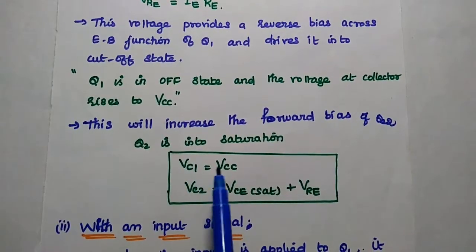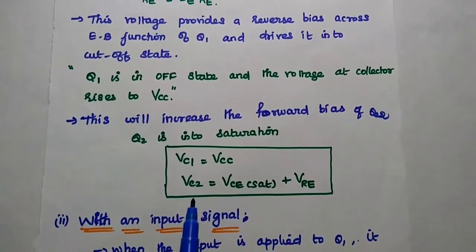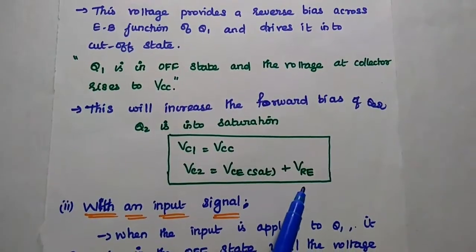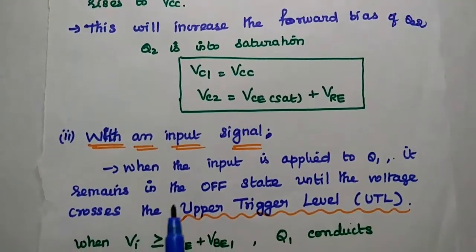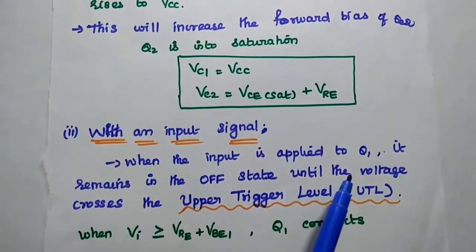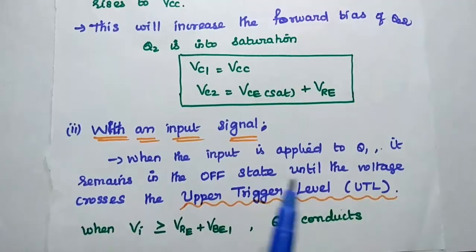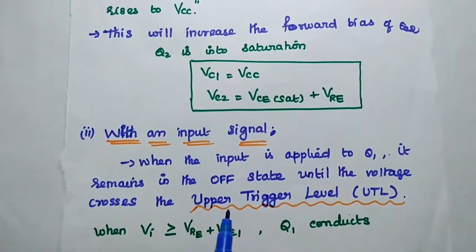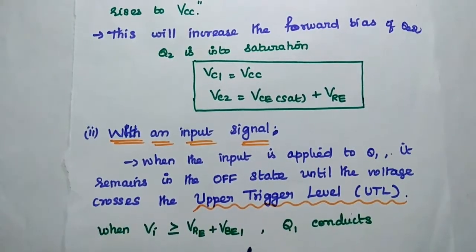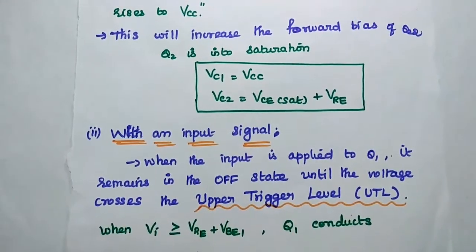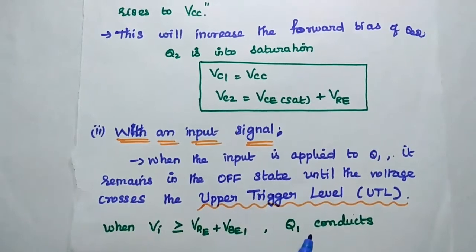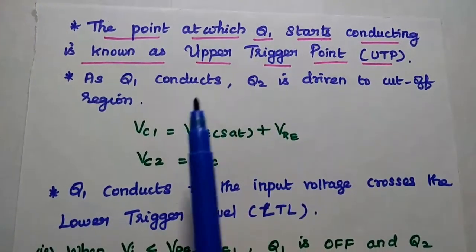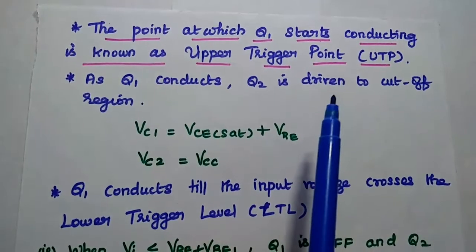The collector voltage at Q1 becomes VCC, and the collector voltage at Q2 equals VCE(sat) + VRE. The second condition is with an input signal: when the input is applied to Q1, it remains in the off state until the voltage crosses the upper trigger level (UTL), represented as VRE + VBE1. Whenever the input voltage is greater than or equal to VRE + VBE1, Q1 starts conducting. The point at which Q1 starts conducting is known as the upper trigger point (UTP).